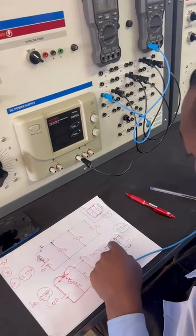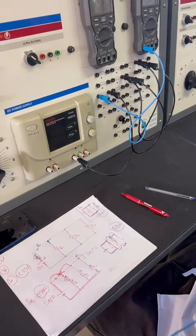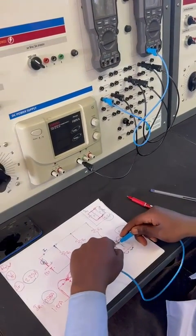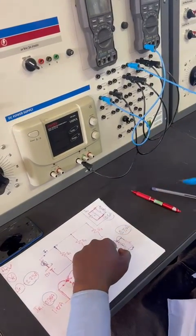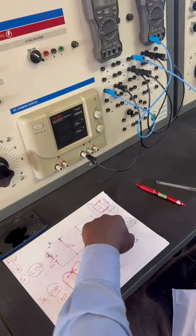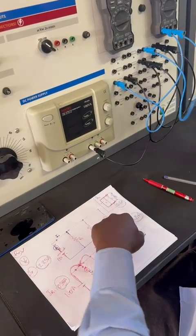I'm going to take it from the right-hand side now. From the positive of R1, it goes to positive of the meter. Then,